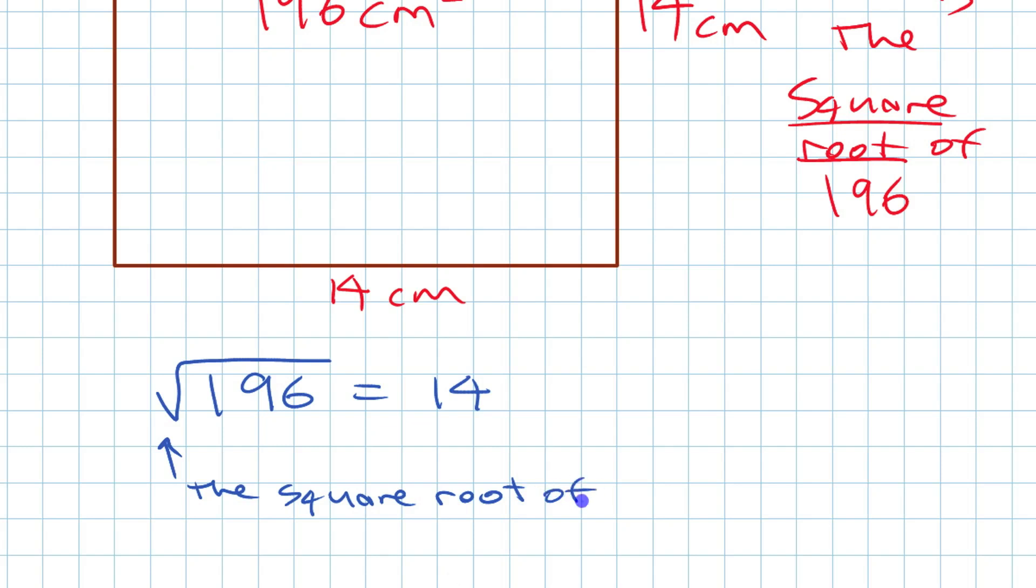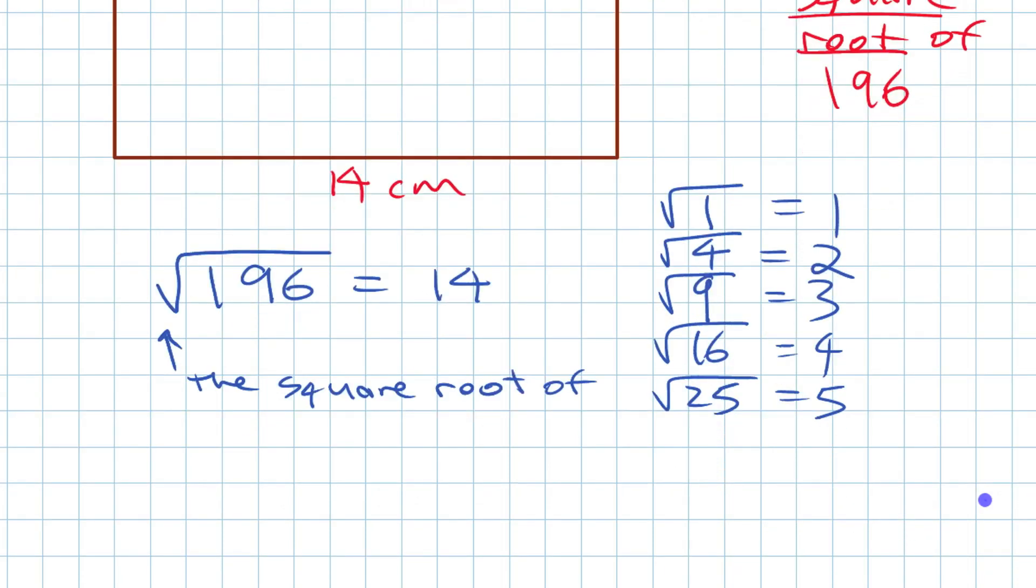Right now we had our numbers before. We had our perfect squares that we had 1, 4, 9, 16, 25. We could say the square root of each of those. Square root of 1 was 1. Square root of 4 was 2. Square root of 16 is 4 and so on. Square root of 25 is 5.